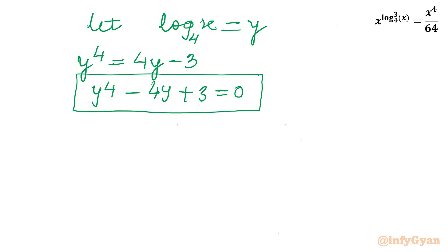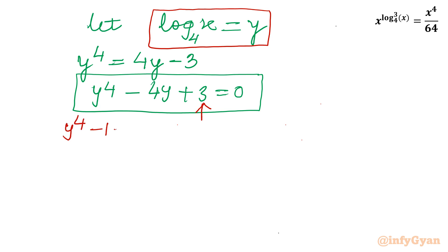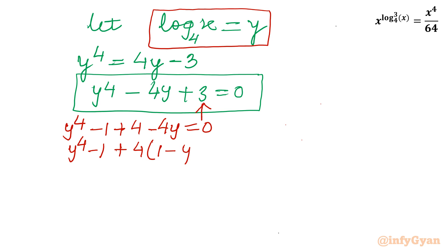We have to solve this quartic equation. This time we won't use SDM or the rational root theorem — we will solve it using factorization only. I will split 3 as −1 and write: (y^4 − 1) − 4(1 − y) = 0, which gives (y² − 1)(y² + 1) + 4(y − 1) = 0 after rearranging. Recognizing y^4 − 1 as a difference of two squares: (y² + 1)(y + 1)(y − 1).